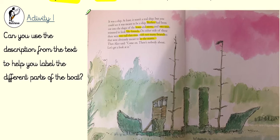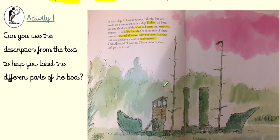Let's get a look at it. Here is your task: can you use the description from the text to help you label the different parts of the boat? There are a couple you might just have to look up — which is the bow and which is the stern of the ship if you get confused. But the rest of the information should help you label the green ship and its different parts.